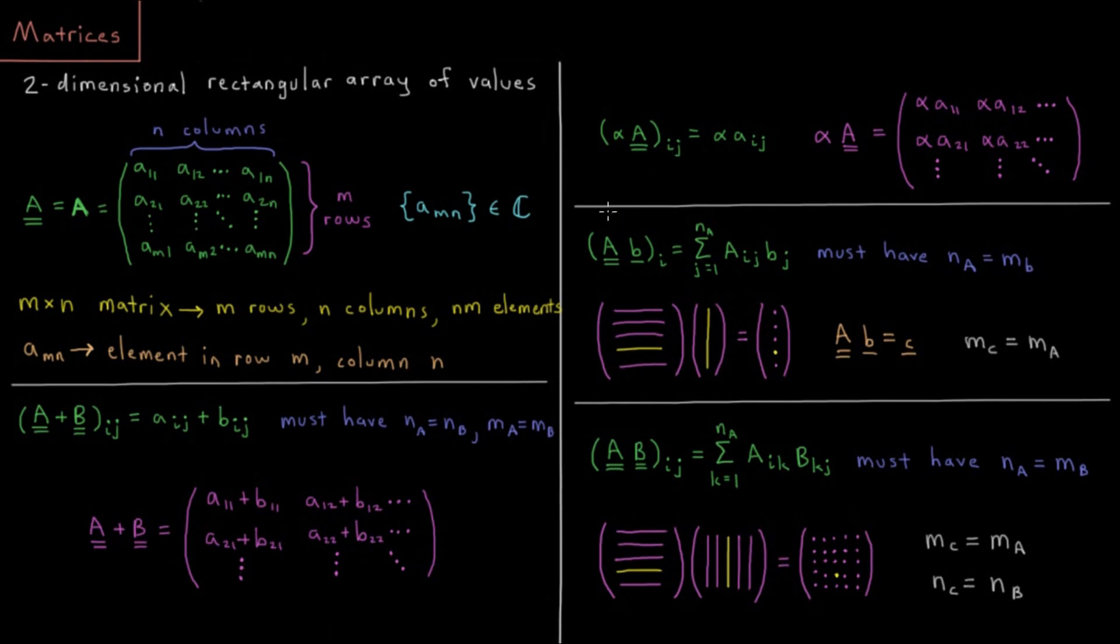Then just like with vectors, we can also multiply them by some scalar value alpha. Any individual element inside alpha times A is just alpha times that element.